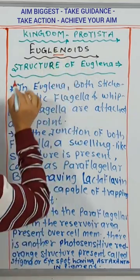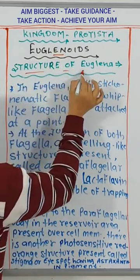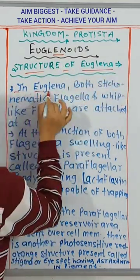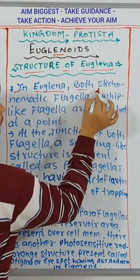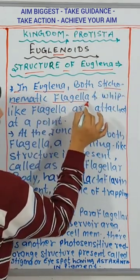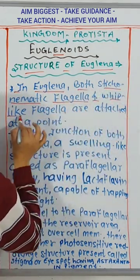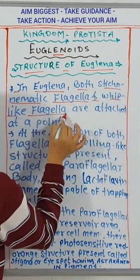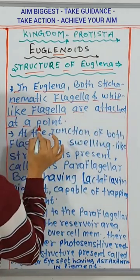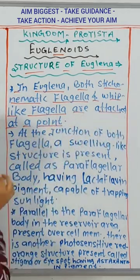Euglenoids — structure of euglena. In euglena, both stichonematic flagella and whip-like flagella are attached at a point.